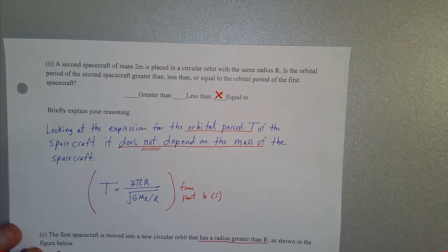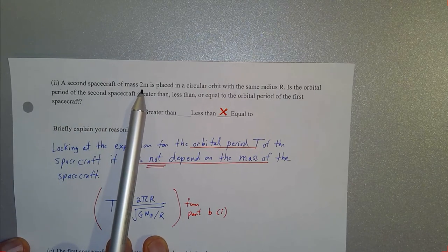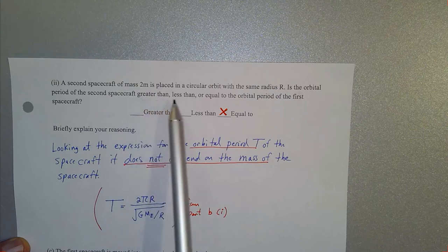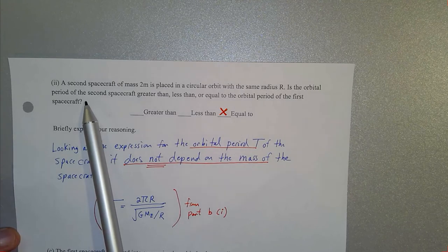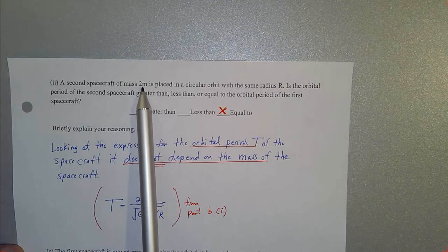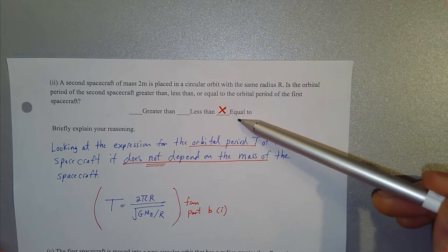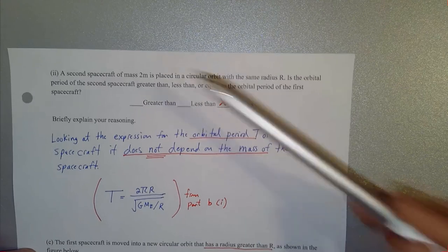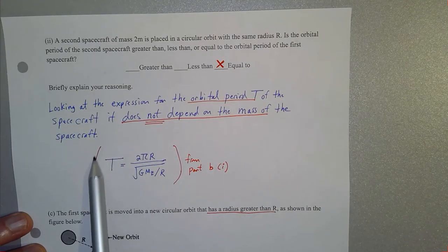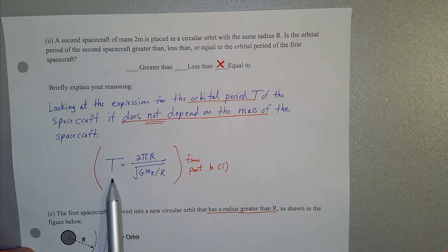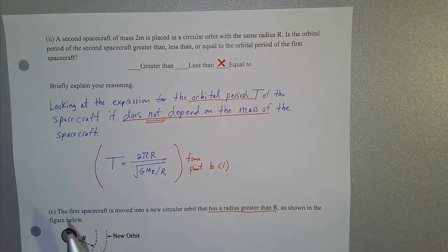Part B part two: a second spacecraft of mass 2m is placed in a circular orbit with the same radius. Is the orbital period greater than, less than, or equal to the first spacecraft's period? Since mass canceled out of the speed equation and the period expression, doubling the mass doesn't change the required speed or the circumference, so the orbital period is equal to that of the original spacecraft.